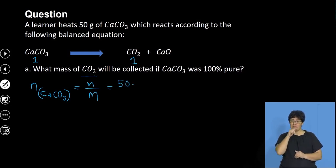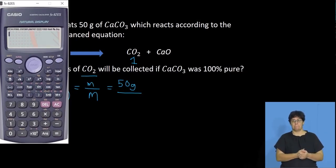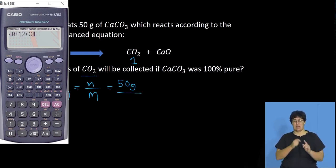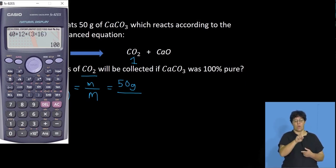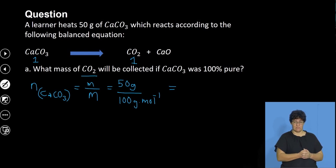The mass of the sample is 50 grams. For the molar mass of calcium carbonate, from the periodic table: calcium is 40, plus carbon which is 12, plus oxygen multiplied by 3 which is 3 × 16 = 48. So the molar mass of calcium carbonate is 100 grams per mole. Therefore, moles of CaCO₃ = 50 ÷ 100 = 0.5 mol.